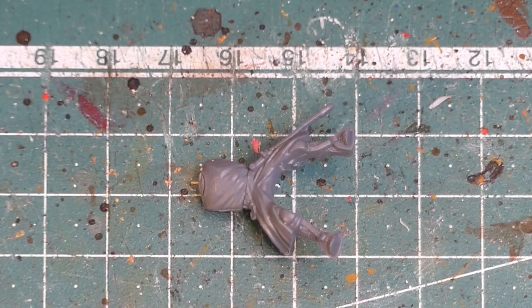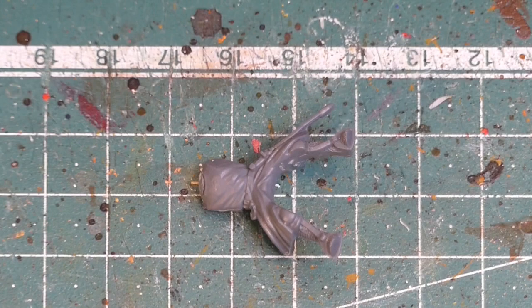While the green stuff hardens I start working on the second knight. This one will be a little bit easier than the first one for he will only get new shoulders in plate armor.